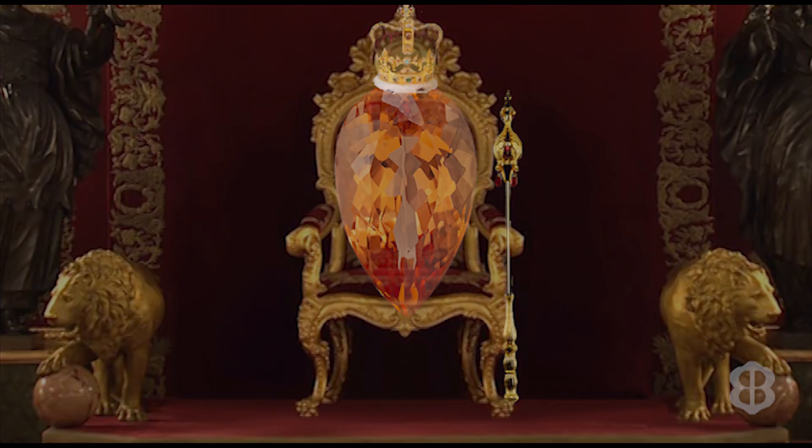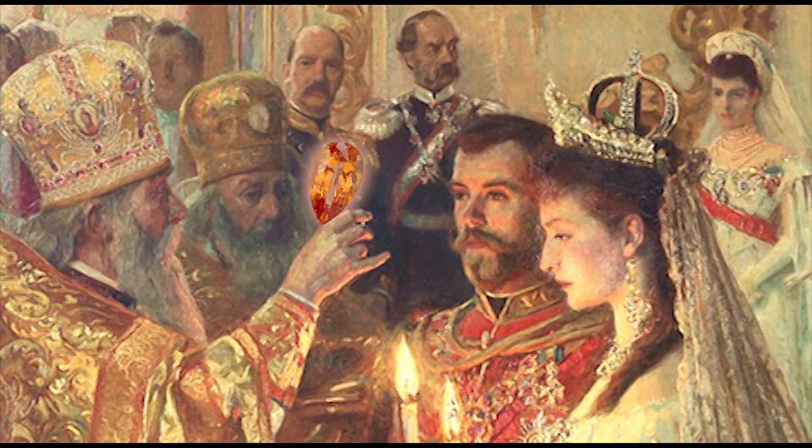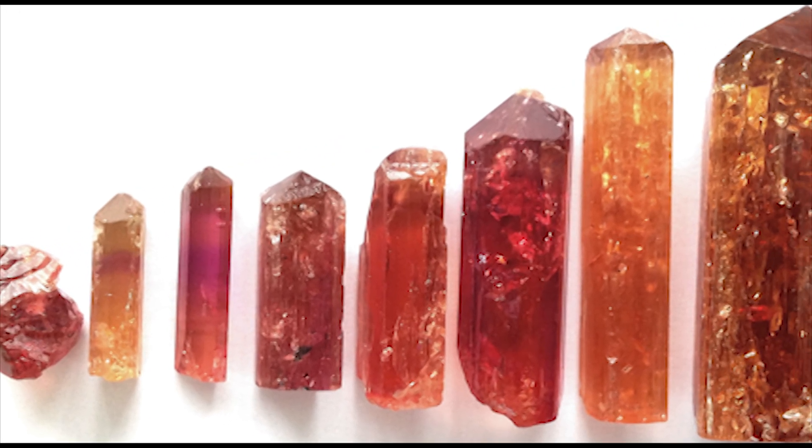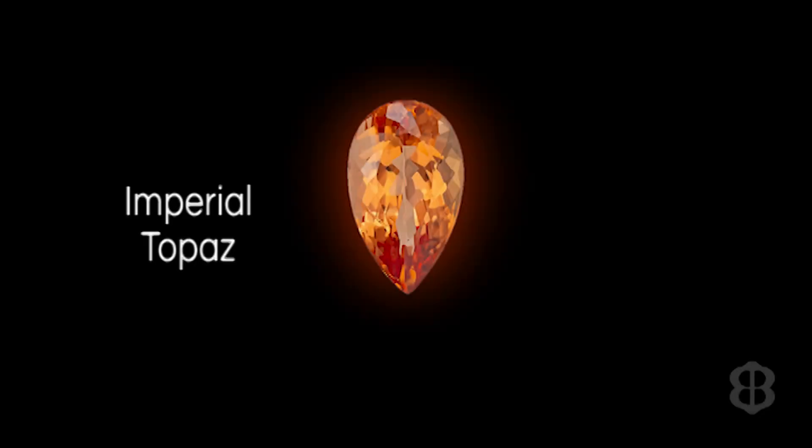This is because back in the 17th century imperial topaz was being mined in Russia and the Russian czars claimed exclusive rights to all topaz stones being mined in Russia with peach or peach orangish or golden color. Topaz of these colors became known as imperial topaz.